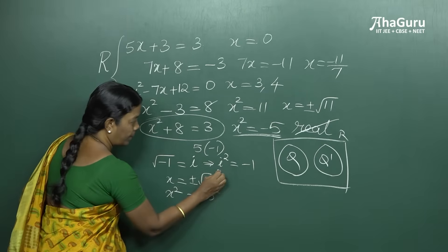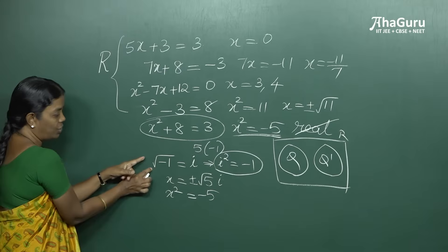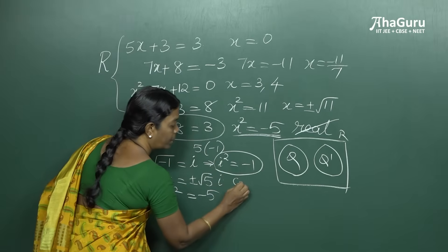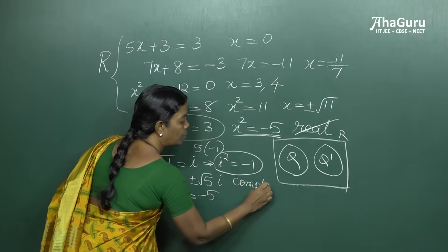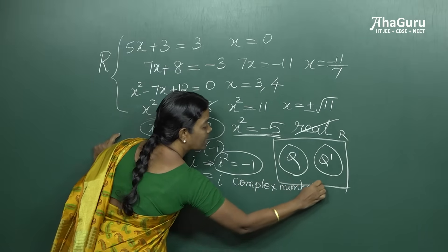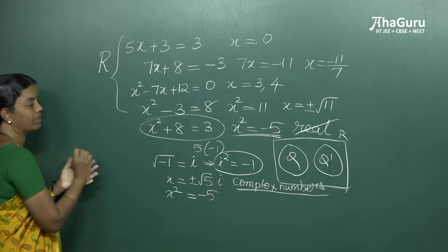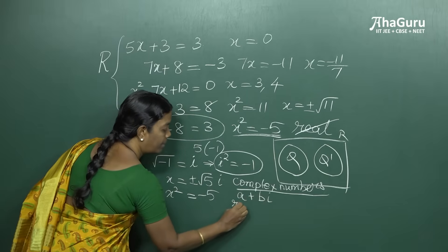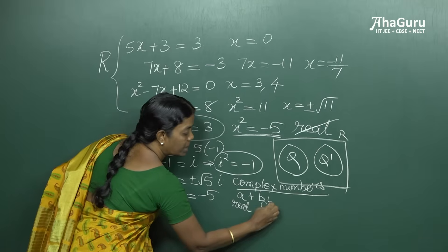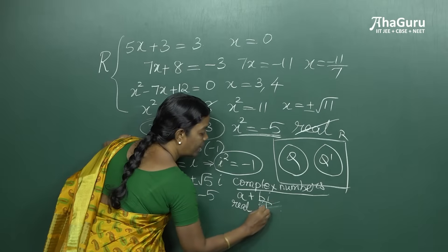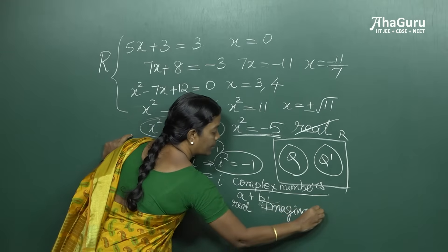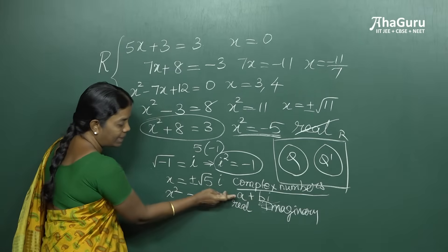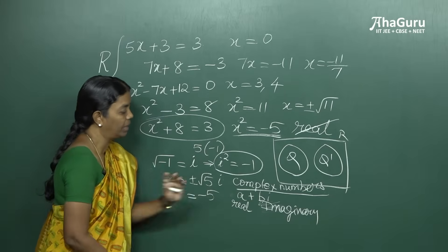Now, i is the basic imaginary number, which is root of minus 1. Using this concept of the imaginary number, we extend the set of real numbers to a new system called complex numbers. A complex number has two parts: one is the real part and the other is the imaginary part. Both a and b are real numbers — a is the real part and b is the imaginary part of the complex number.